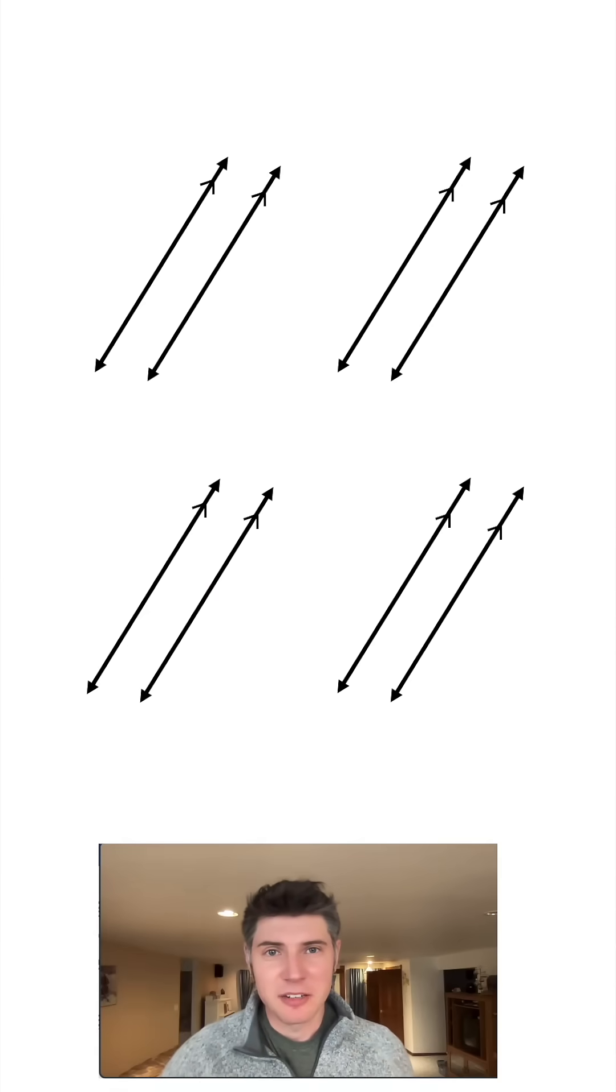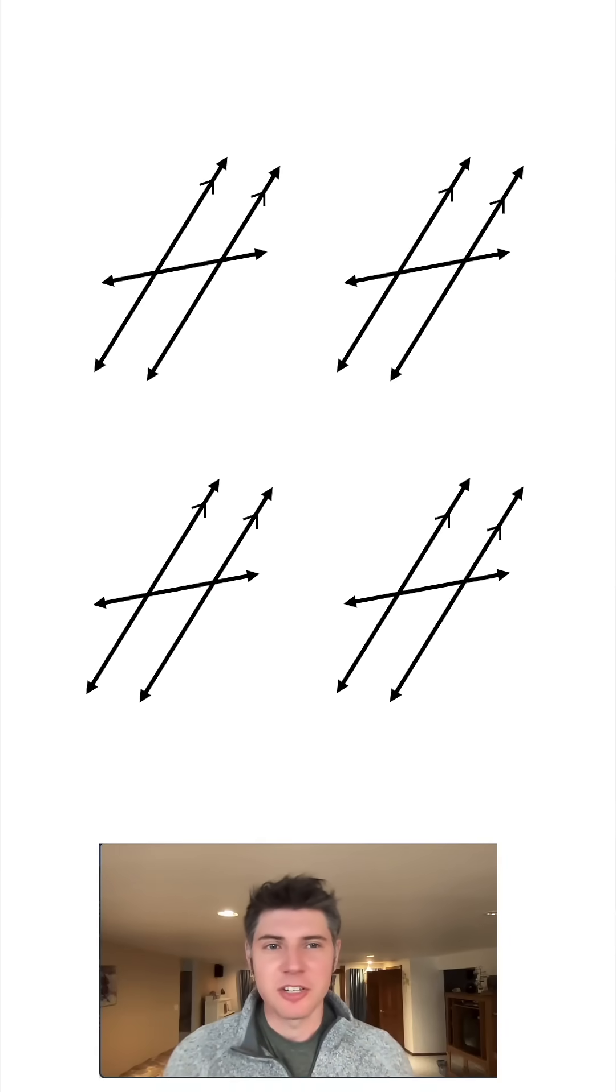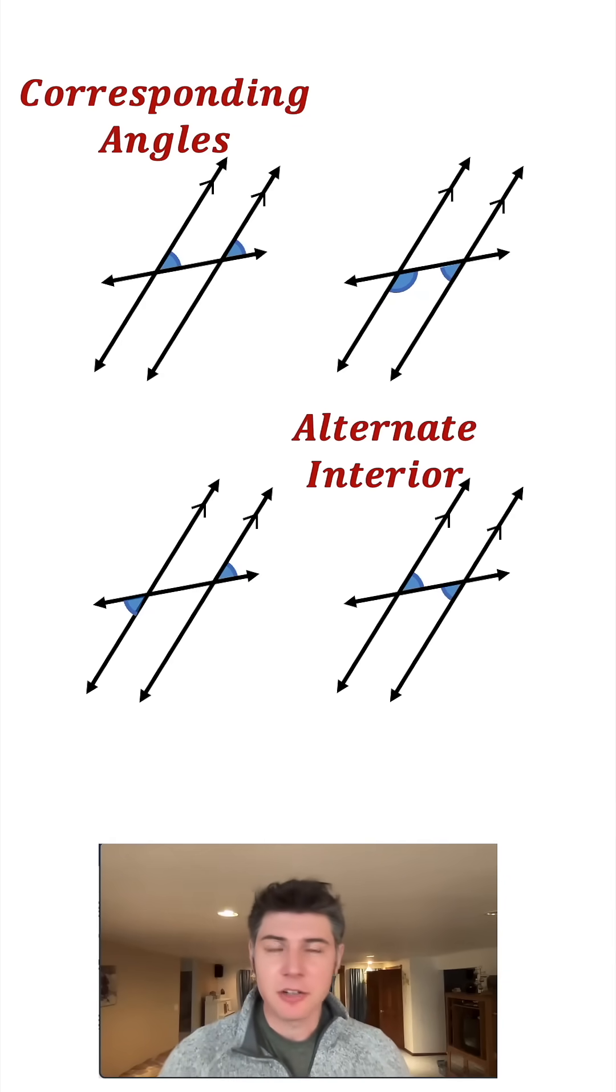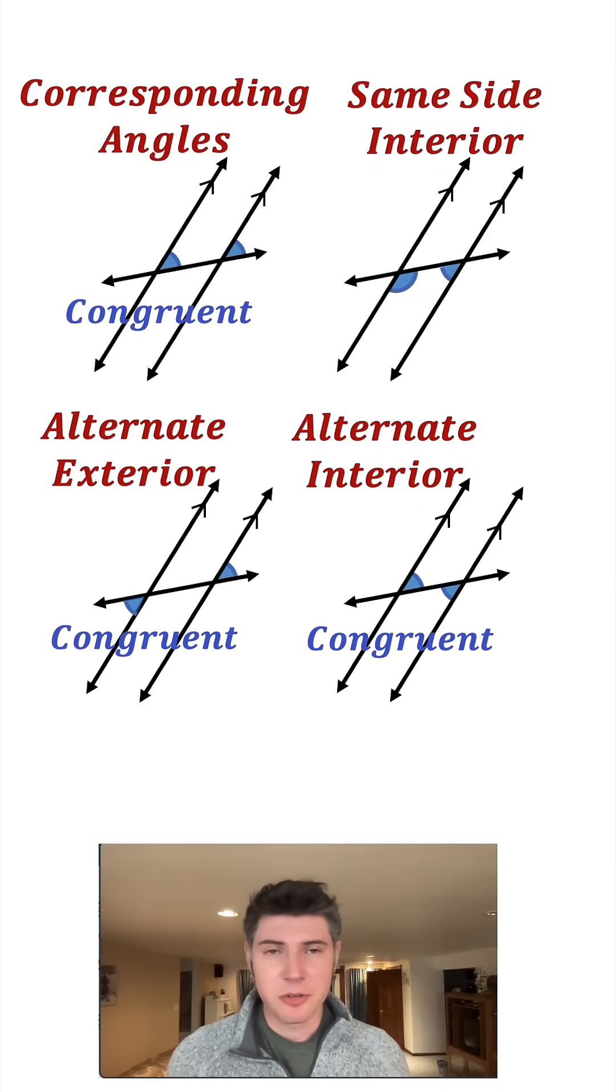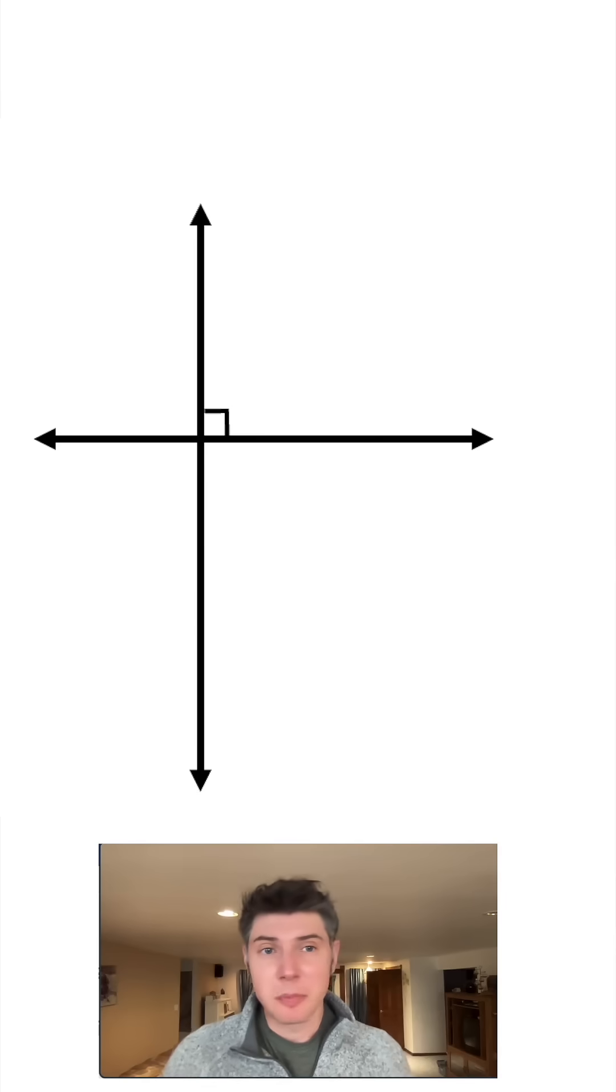Let's look at parallel lines. Toss a line through them, call this the transversal. This makes a whole bunch of angles and we can name and study these angles. We have corresponding angles, alternate interior angles, alternate exterior angles, and same side interior angles. Some of these are congruent to each other and some add up to 180 degrees, or in other words are supplementary. We can also look at perpendicular lines which form right angles with their intersecting line. Two lines perpendicular to the same line will be parallel to each other.